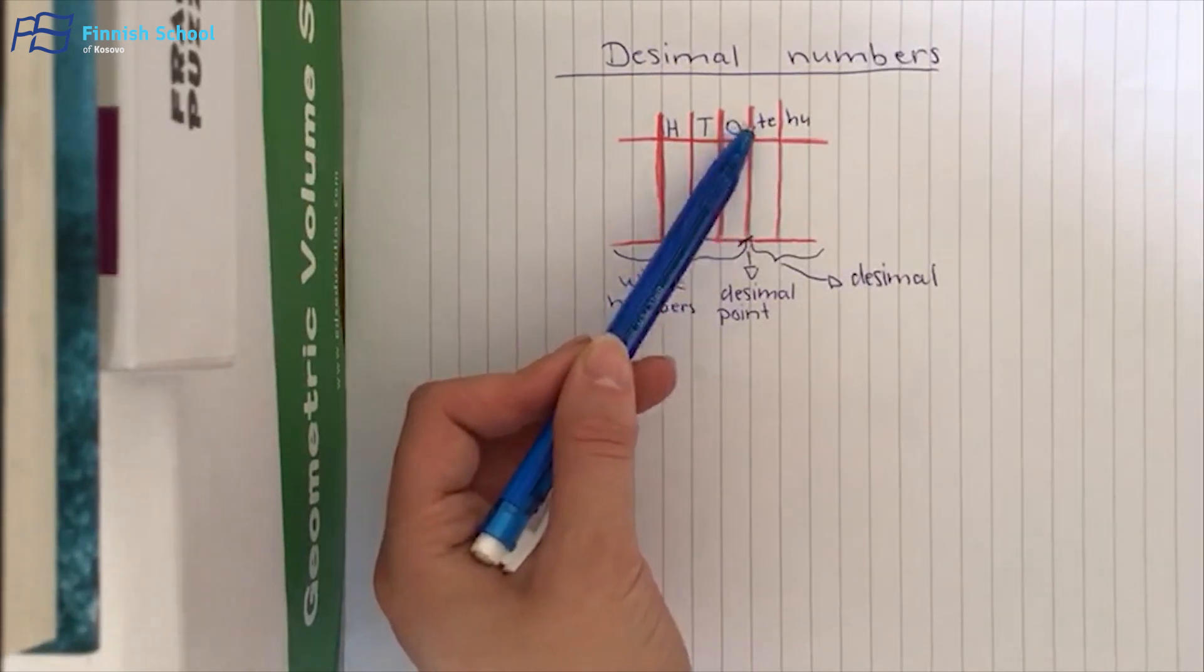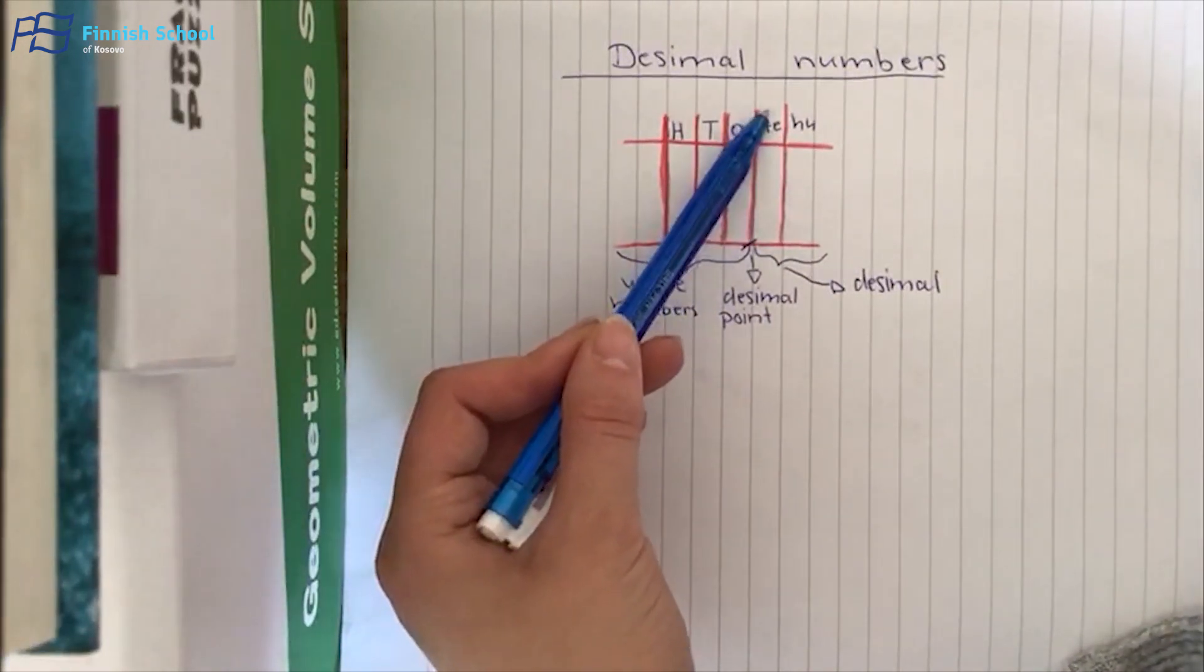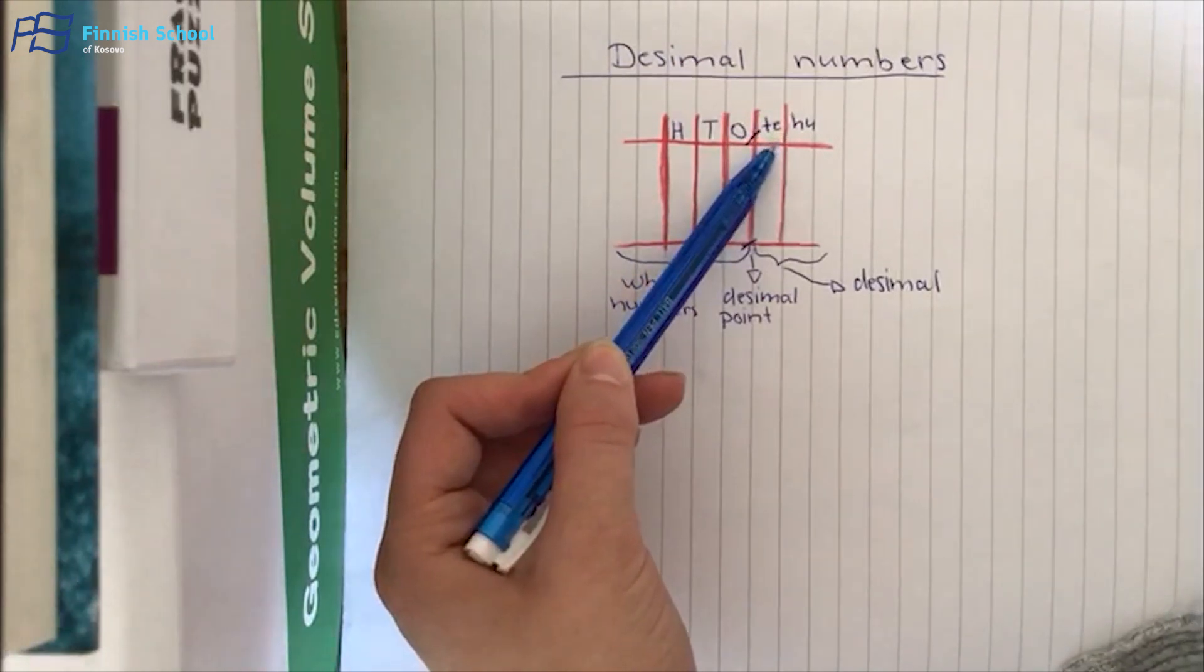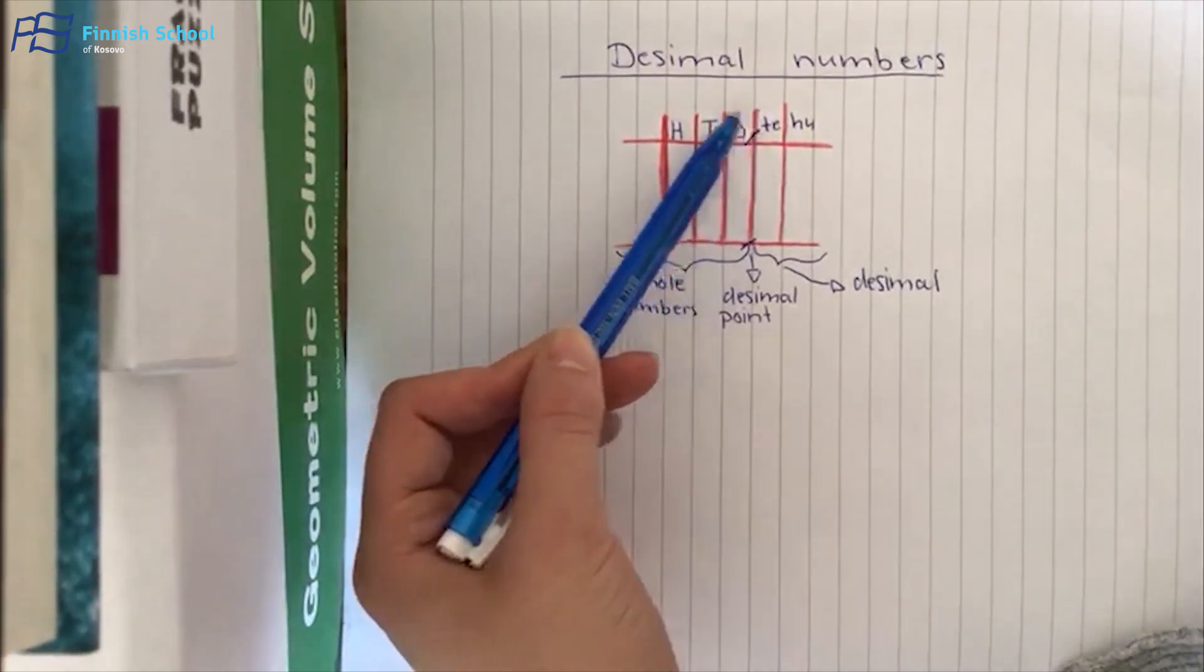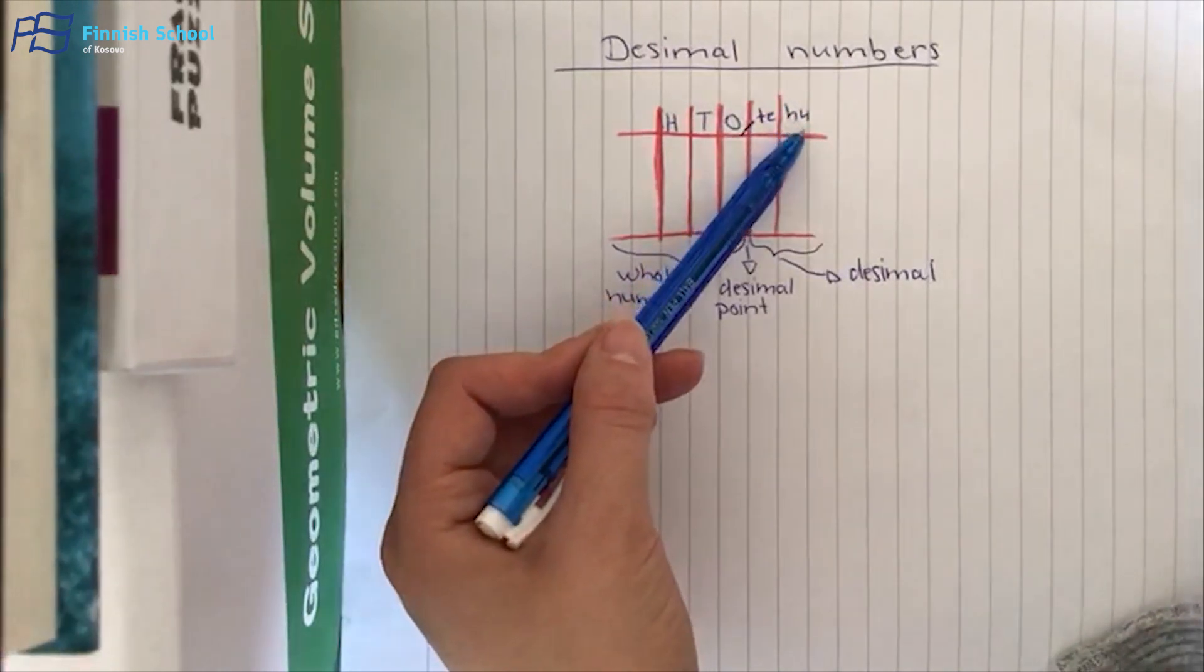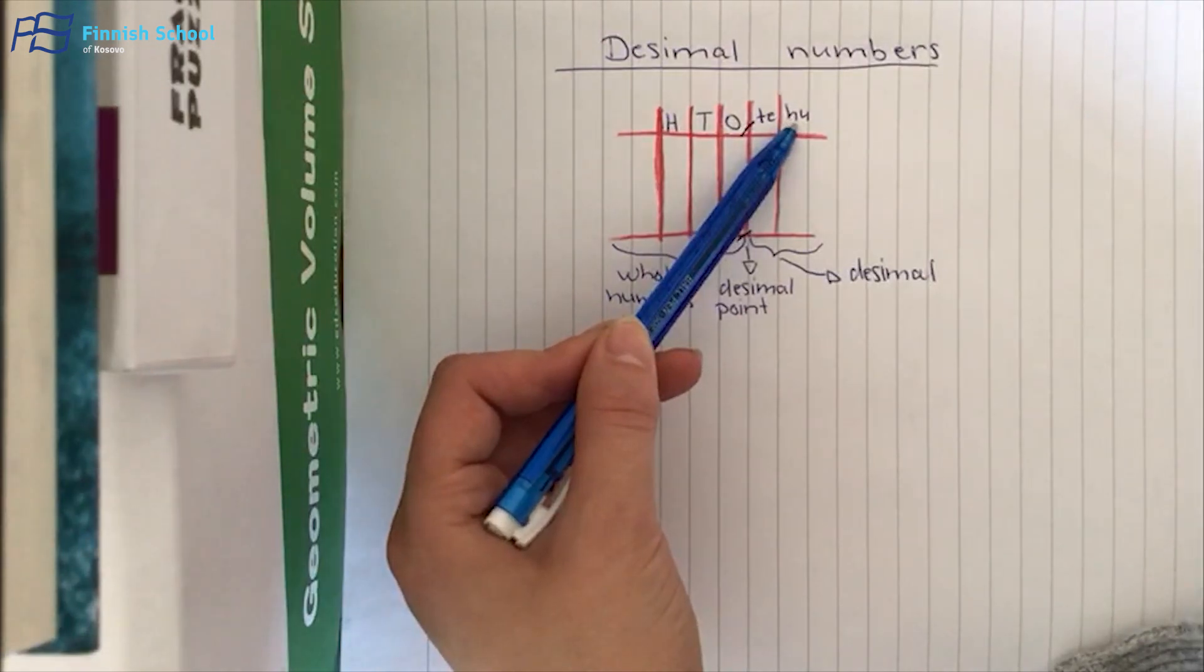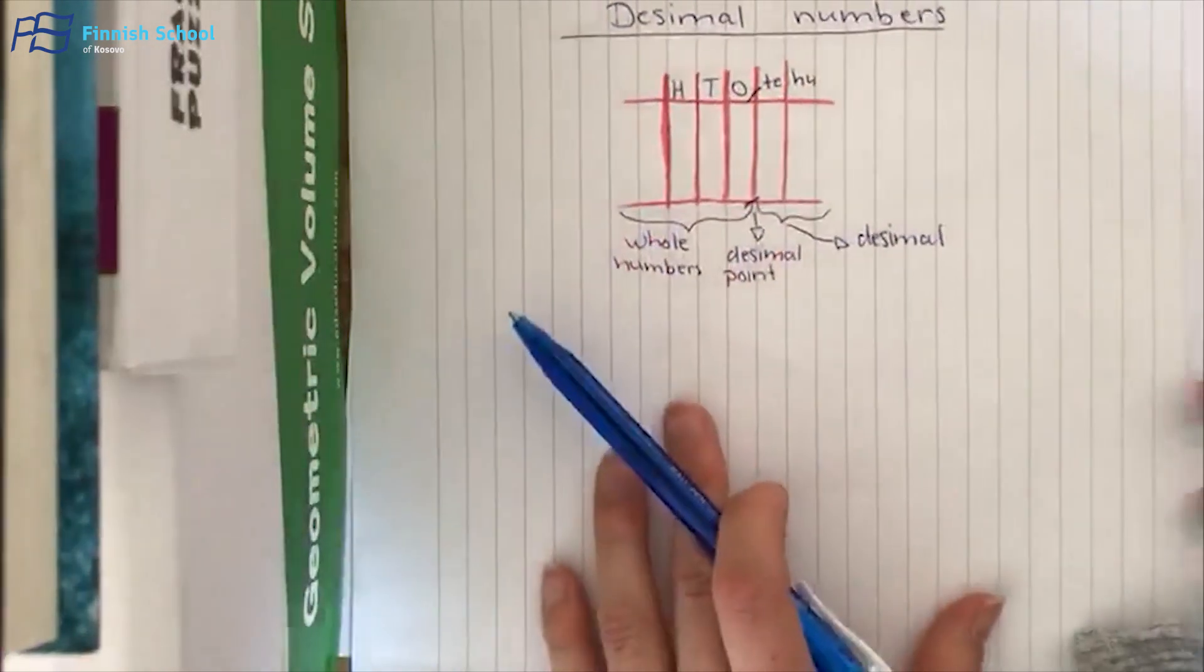The first decimal here is called the tenths, and the second decimal is called the hundredths.